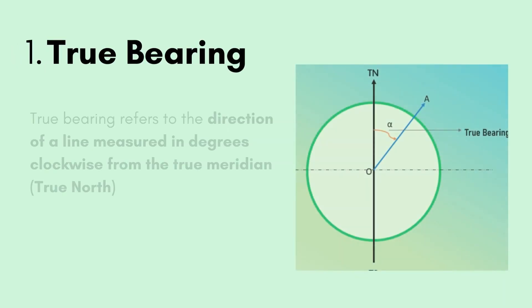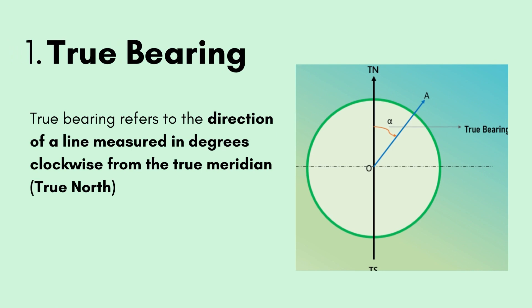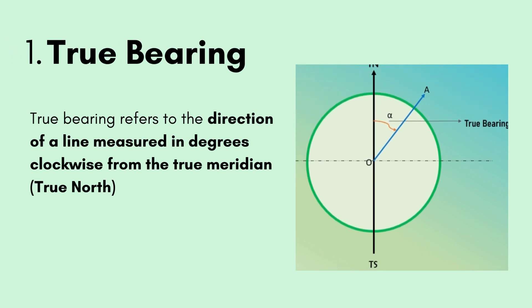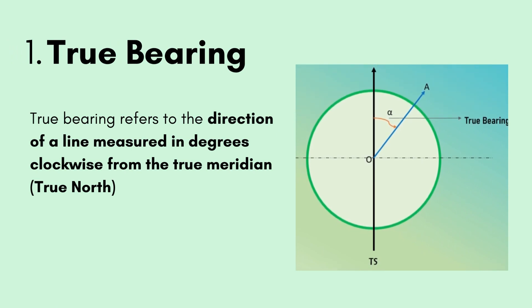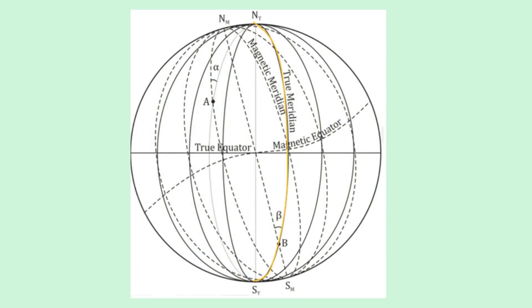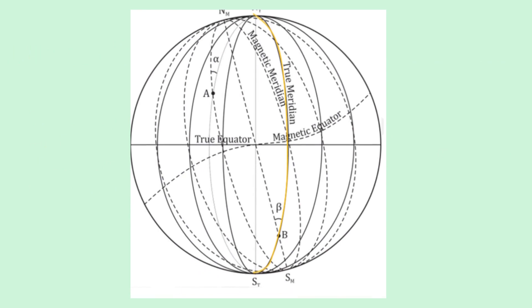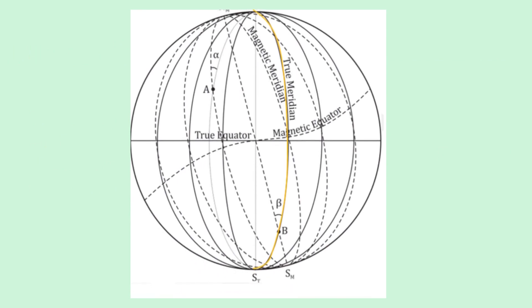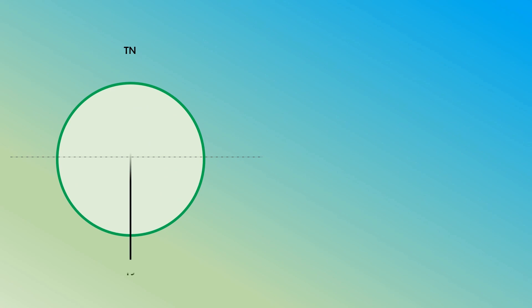Number one is true bearing. True bearing refers to the direction of a line measured in degrees clockwise from the true meridian. The true meridian represents the line of true north-south alignment on earth's surface. As a true meridian at a point is fixed, the true bearings provide a fixed reference direction unaffected by magnetic variation. In the figure, we have designated all the directions where Tn and Ts are the true north and true south that form the true meridian.